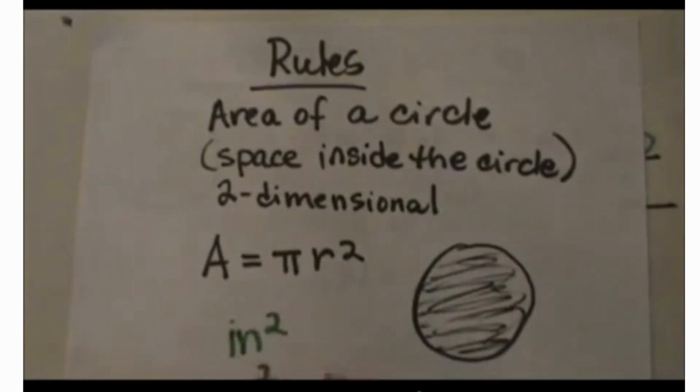Inches squared, units squared, centimeters squared. Your formula is area is equal to pi which is 3.14 times the radius squared.